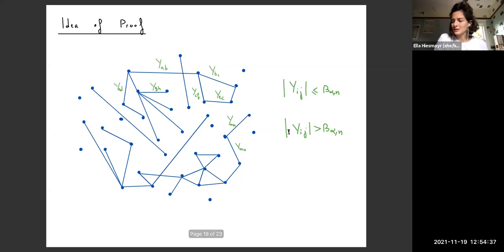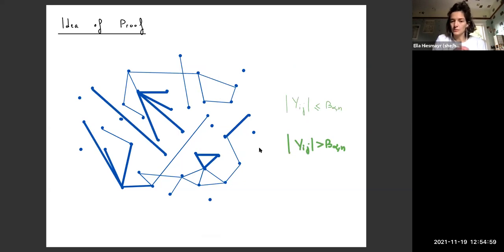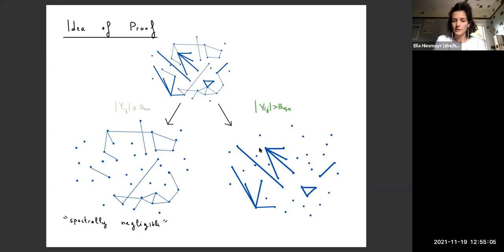In the last few minutes, I just want to mention quickly the idea of proof. We start off with a graph that has edge weights. The first step is to partition these edge weights into those that are smaller than a certain threshold and those that are larger than a certain threshold. From now on, I will depict those that are larger than this threshold by thick lines and those that are smaller by thin lines. Once we separate the graph into these two graphs, we can first show that the graph that has only low edge weights is spectrally negligible in the sense that it doesn't contribute much to the largest eigenvalue.